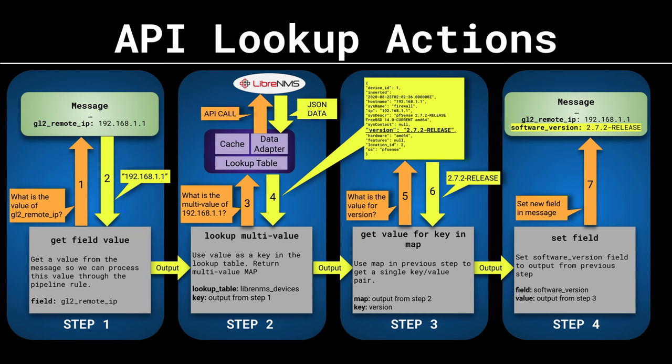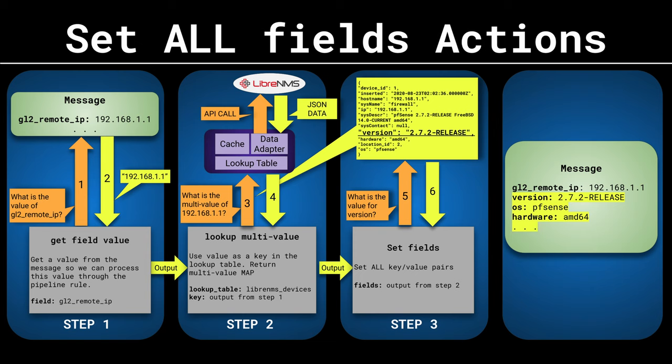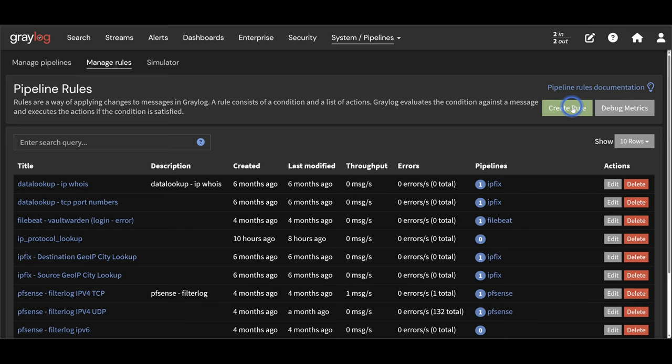There's a lot going on here but it's really not that bad once you break it down. The first thing we're doing is getting the IP address of the device sending the message using the GL2_remote_ip field. We store this IP address as a variable and output it to the next action. In the next step, we give the lookup table the IP address as the key and get a multi-value response back, storing it as a variable. This variable with multiple key value pairs is called a map. We then give the map a key and get a single value in response, store it in a variable, and in the last step set it as a new key value pair in the message. Note: if you want to set all key value pairs returned by the lookup table, you can use the Set Fields action instead.